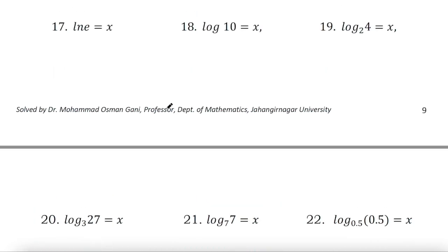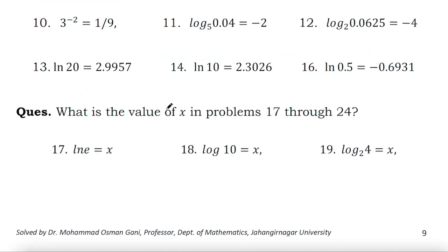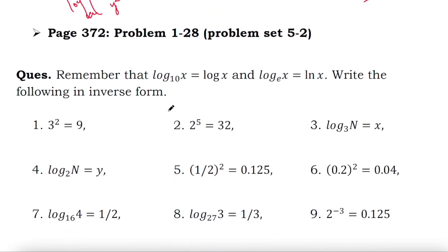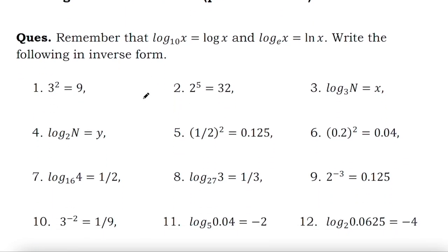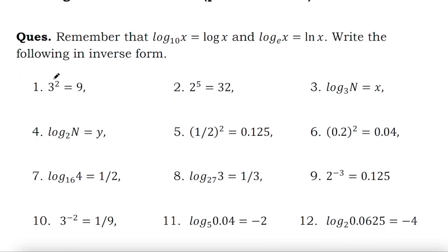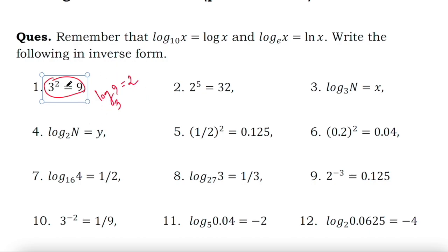Now let us try to solve other types of problems. For example, this one says: write the following in inverse form. We know 3 squared equals 9 is the exponential form. Therefore the inverse form will be: log 9 to the base 3 equals 2. This is the inverse form of that exponential form.